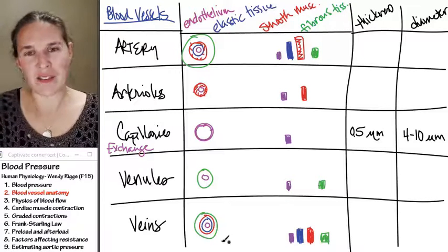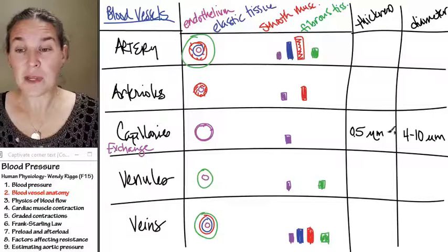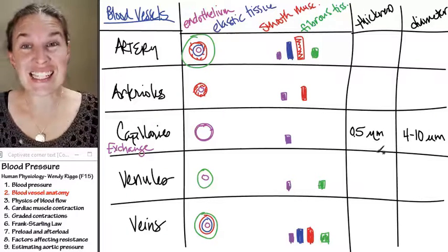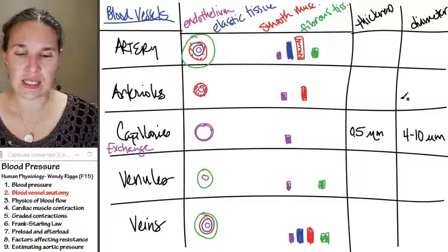Veins are floppy little things, which how are we going to know if they're floppy or not? The floppiness is going to, we can look at the differences in thickness and diameter to be able to see things like that. So let's compare our thicknesses and diameters.